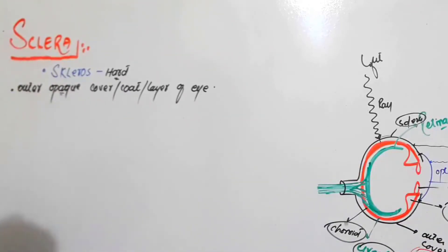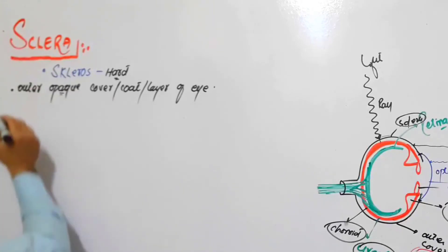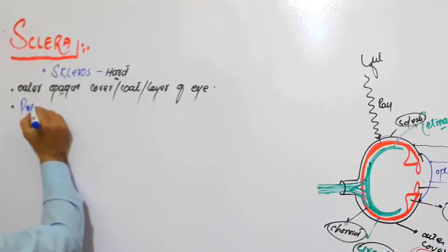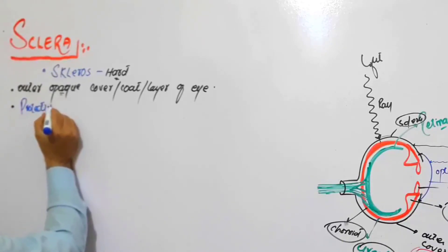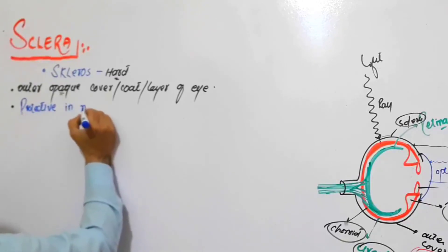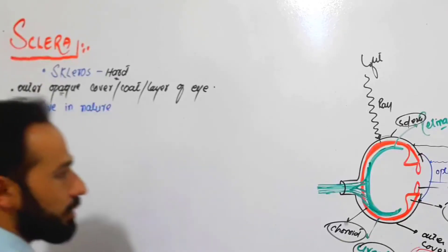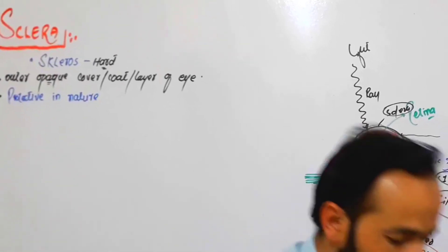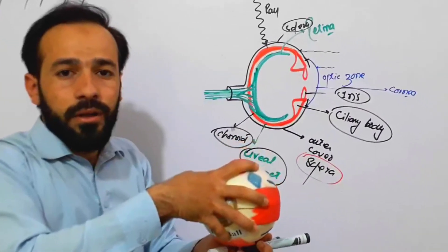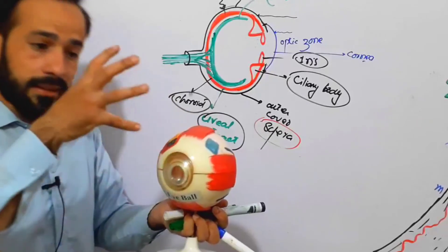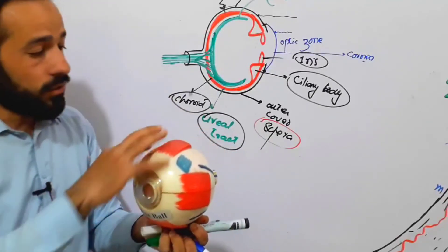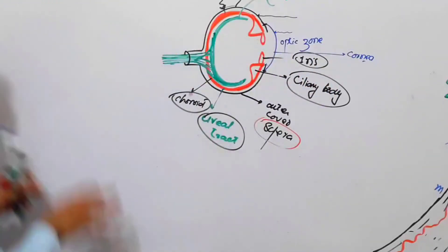The sclera is very much protective in nature. If you apply pressure on the eye, the sclera — being a hard cover — will not let that pressure pass to the inside of the eye. That is why we say the sclera is mostly a protective layer.